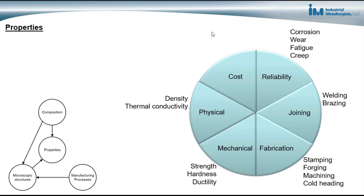Speaking of properties, I want to touch briefly on the different properties that we're concerned with. People tend to think about steel for its strength, hardness, ductility, and toughness, but there are also other properties that are important. When selecting materials to use in components, we have to think about the properties with respect to ease of fabrication — how we use these to stamp a sheet of steel into a component, or machine it, or forge it, or cold-head it, or use other fabrication processes. Also, ease of joining — if we have to join two pieces of steel by welding or brazing, we want to think about the alloy that will best be able to join using these processes.